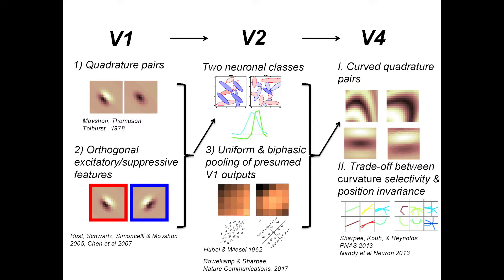We tested this prediction on a different synthetic dataset. Two V4 neurons were probed with line segments forming either tight curvatures or not. For each neuron we show responses above 95% of the maximum rate. Neurons sensitive locally to more shallow shapes had more position invariance than neurons selected for tighter curvature — confirming the trade-off between curvature selectivity and position invariance.